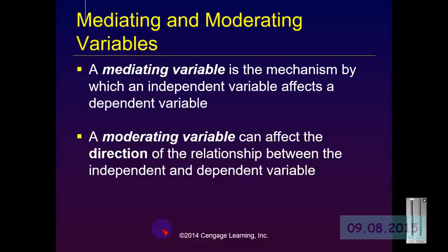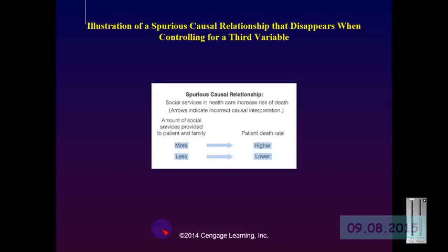Sometimes there are things within the social environment or within individuals themselves that mediate or come between our intervention — the independent variable — and the outcome or dependent variable. Sometimes you will see mediating variables called intervening variables in some studies. The moderating variable is something that can affect the direction of the relationship between the independent and dependent variable. When mediating and moderating variables get in the way of our understanding, it is said to cause a spurious causal relationship.